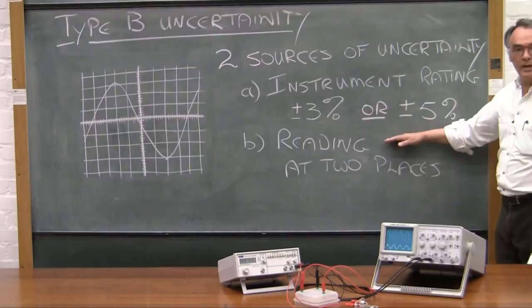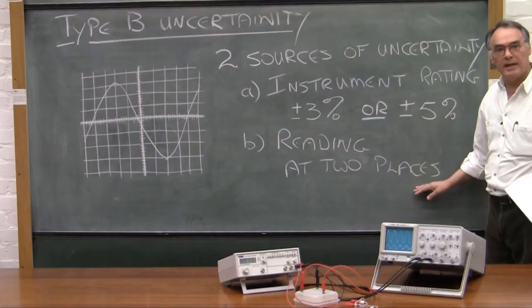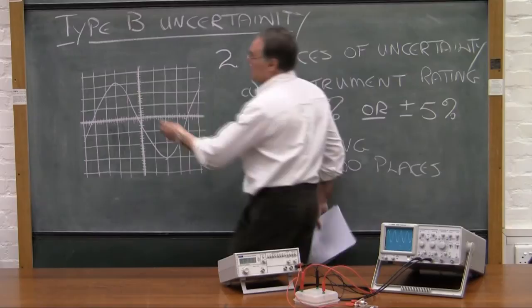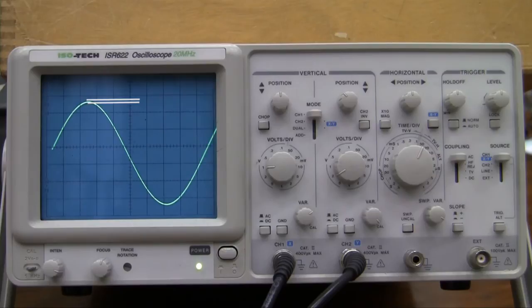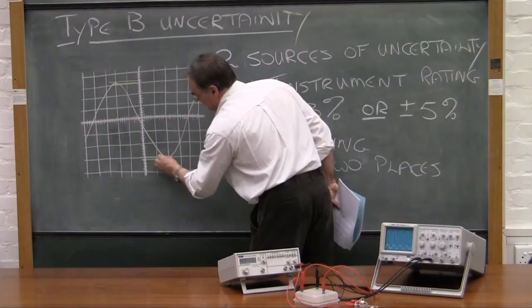Now when you do the reading of the signal, you're going to have to look at the reading at two places. Remember, you're reading a peak-to-peak voltage, so you're going to have some uncertainty in the reading around that point and there will be some uncertainty around this point.